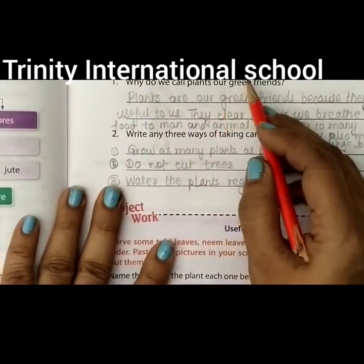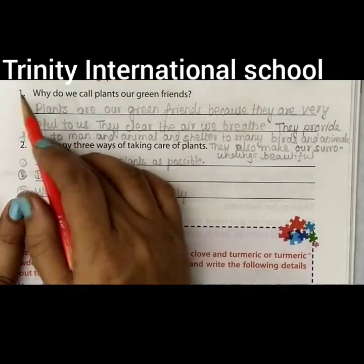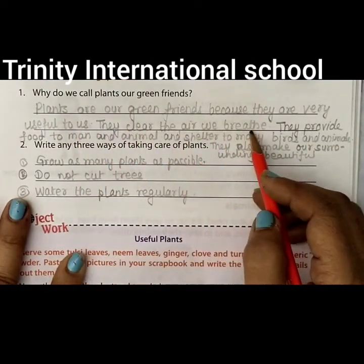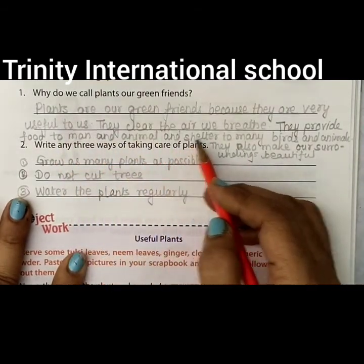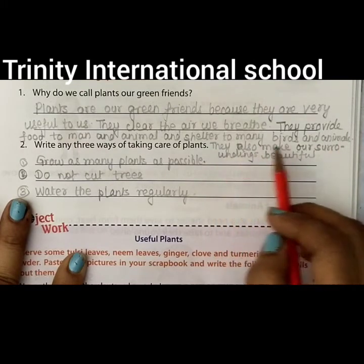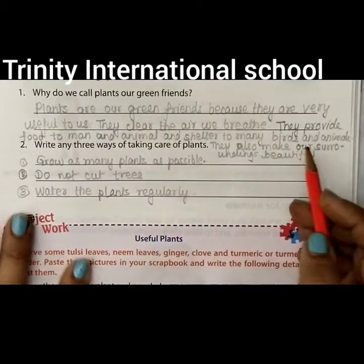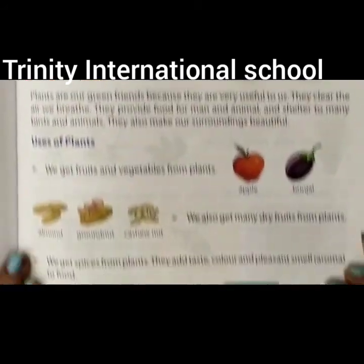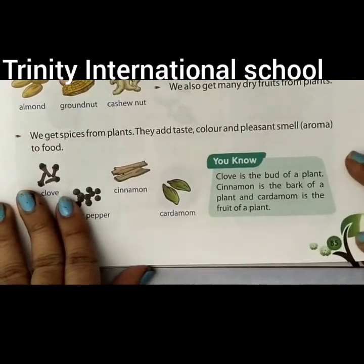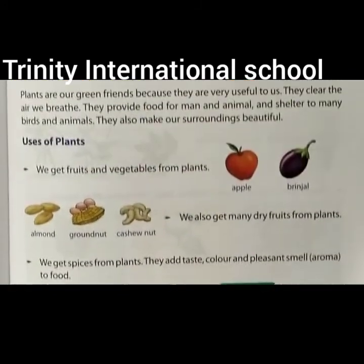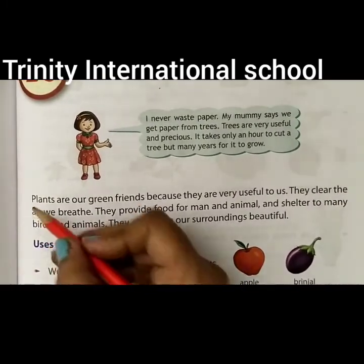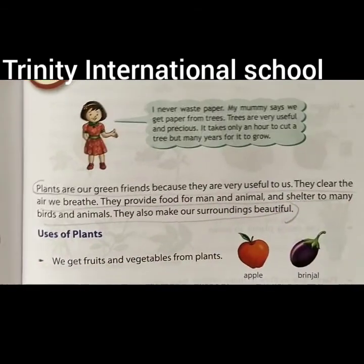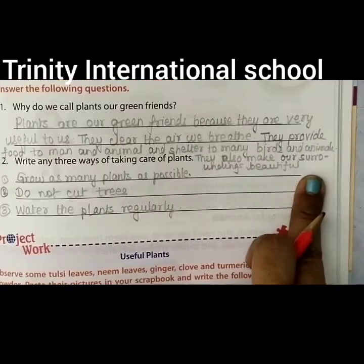Now, why do we call plants our green friends? Plants are our green friends because they are very useful to us. They clean the air we breathe, they provide food to man and animals, and shelter to many birds and animals. They also make our surroundings beautiful. The answer is on page number 85 in your textbook.